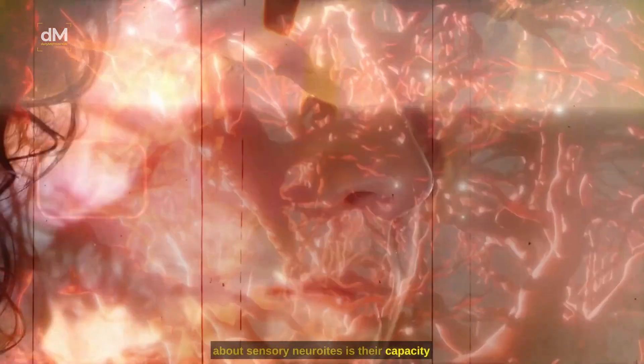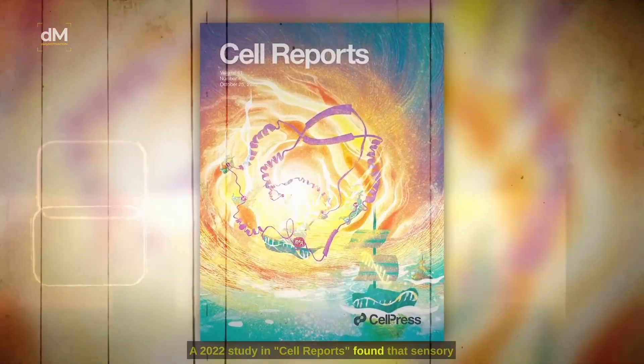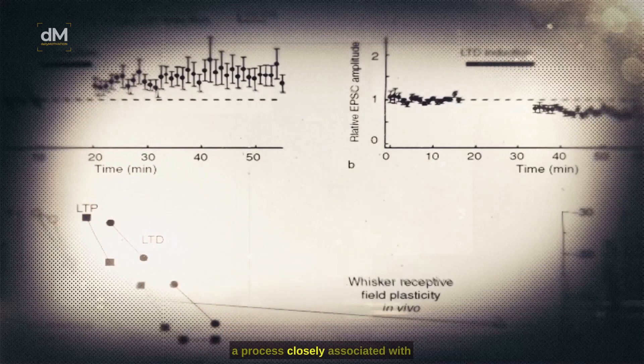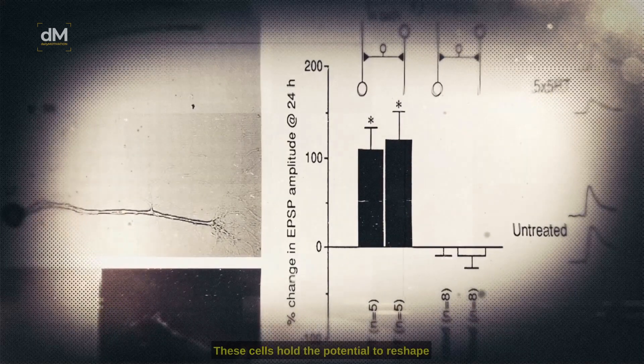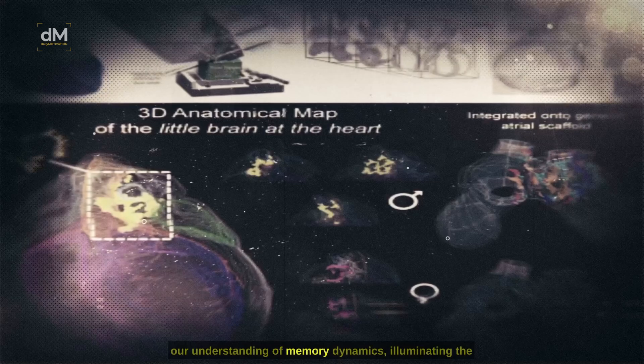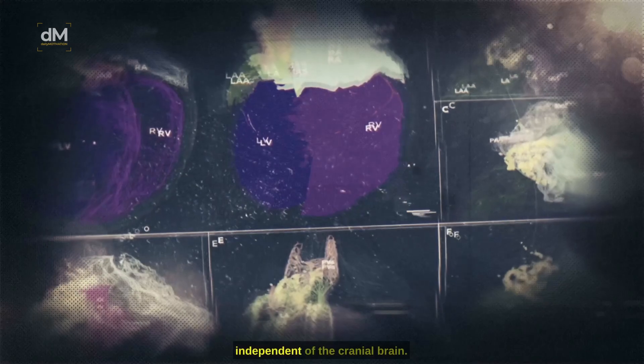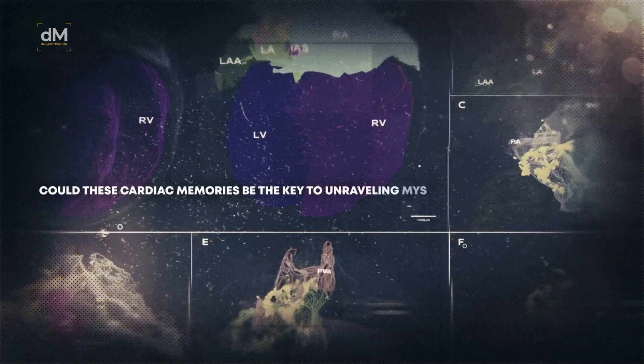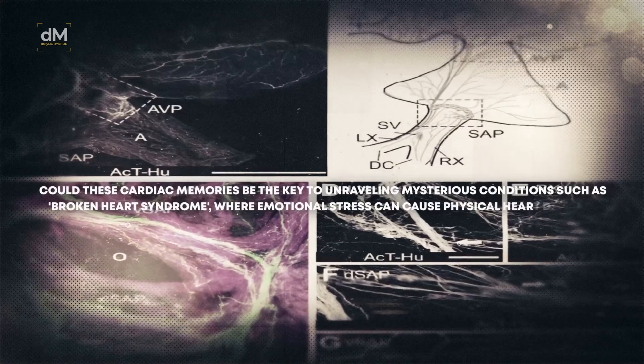One of the most startling revelations about sensory neuroites is their capacity to form independent memories. A 2022 study in Cell Reports found that sensory neuroites exhibit long-term potentiation, a process closely associated with memory formation and storage in the brain. These cells hold the potential to reshape our understanding of memory dynamics, illuminating the enigma of how the heart might remember, independent of the cranial brain. Could these cardiac memories be the key to unraveling mysterious conditions such as broken heart syndrome, where emotional stress can cause physical heart damage?